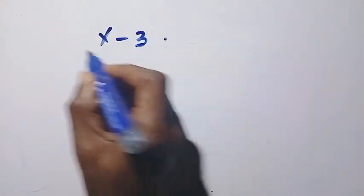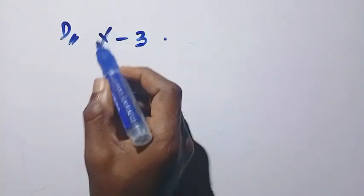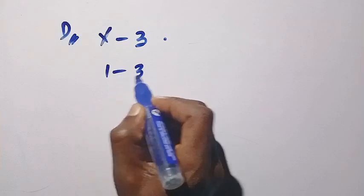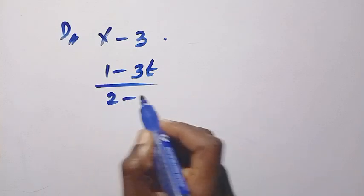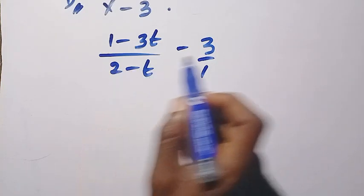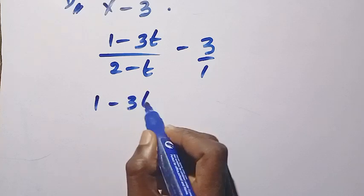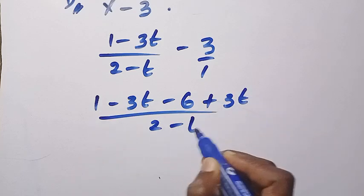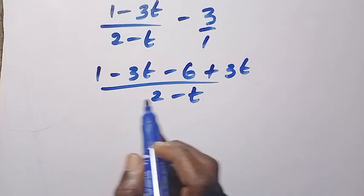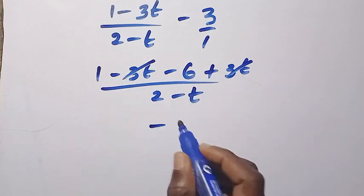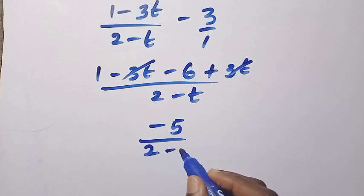For the denominator, we have x minus 3. Replacing x with (1 minus 3t) over (2 minus t) and then subtracting 3, we get (1 minus 3t) over (2 minus t) minus 3. Combining over a common denominator: (1 minus 3t) minus 3 times (2 minus t), giving (1 minus 3t) minus (6 minus 3t), which equals 1 minus 6, giving minus 5, all divided by (2 minus t). So the denominator is minus 5 over (2 minus t).